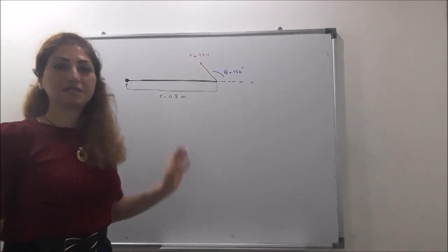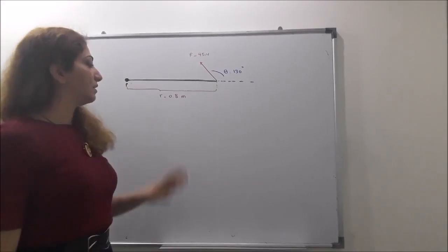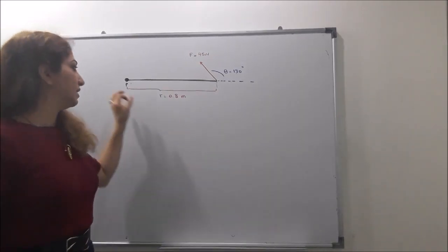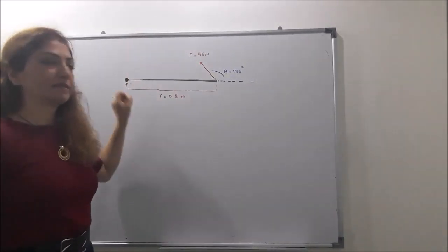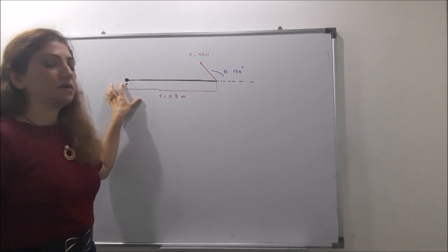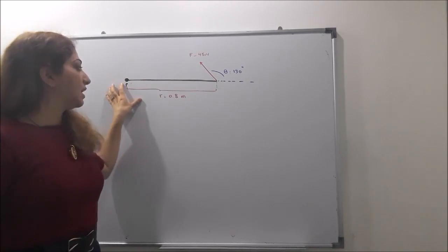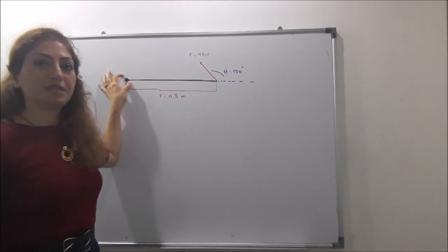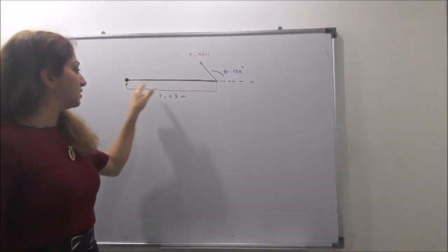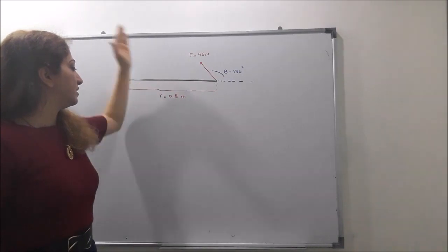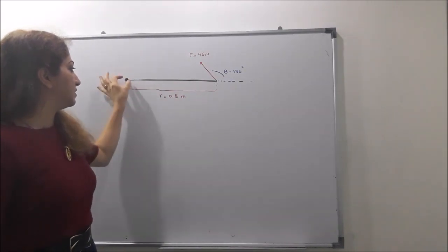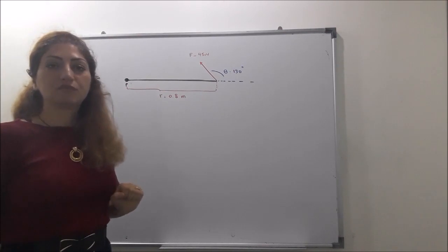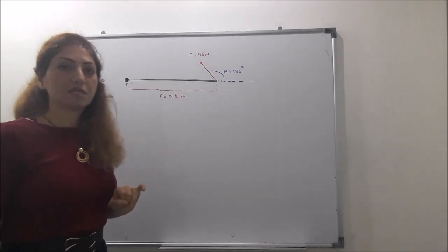An example is given here. It can be a door which can be closed and open. We can rotate it around this fixed point, or any kind of objects. This is the door itself and this is the hinge, or it can be the pivot. So this object is rotating, can be rotating around this fixed point or the pivot. We want to find the torque of this object.